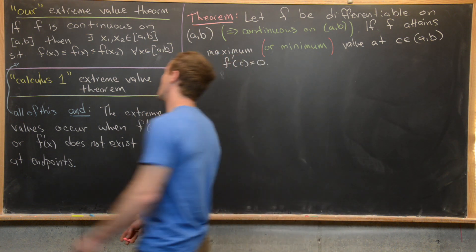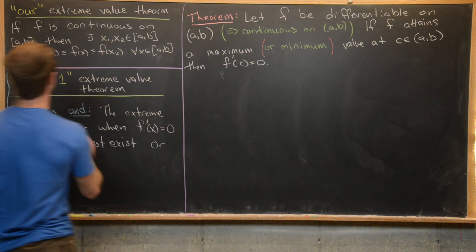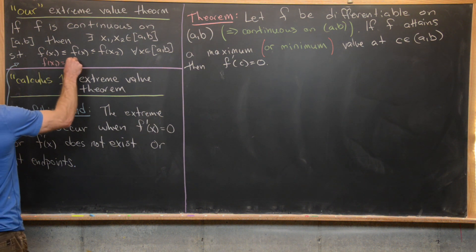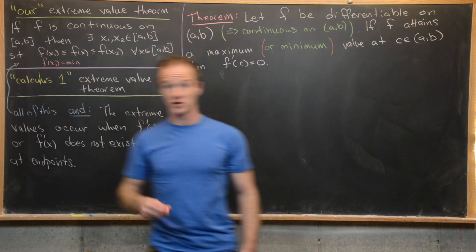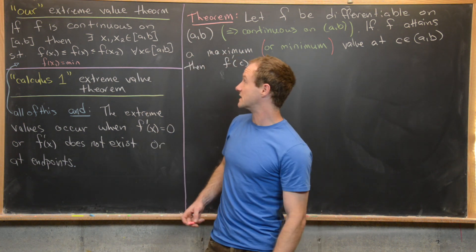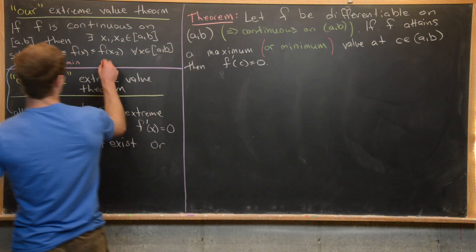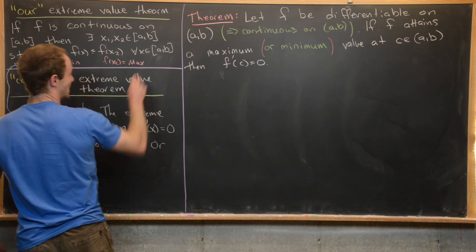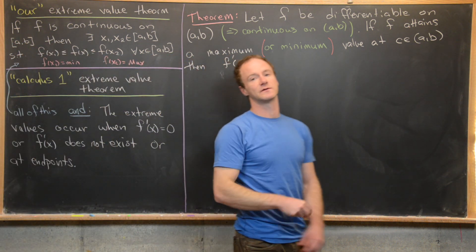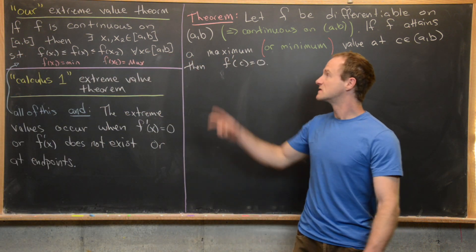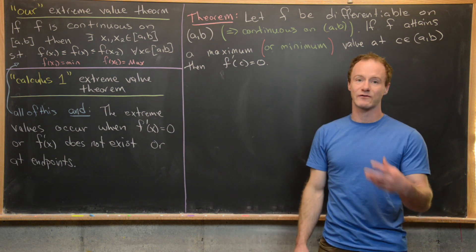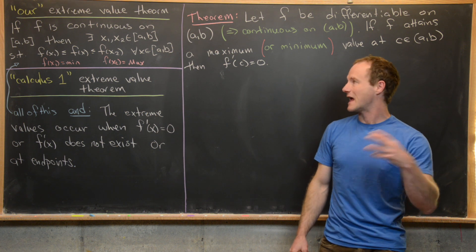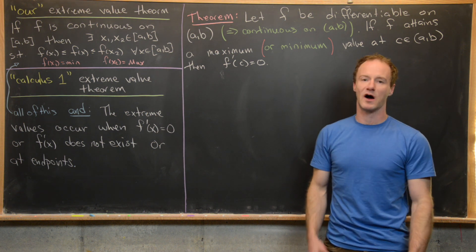Under this setup, f(x1) is the minimum of the function on the interval [a, b], and f(x2) is the maximum of the function on the closed interval [a, b]. So what this is saying is that every continuous function on a closed interval attains a minimum and a maximum on that interval.